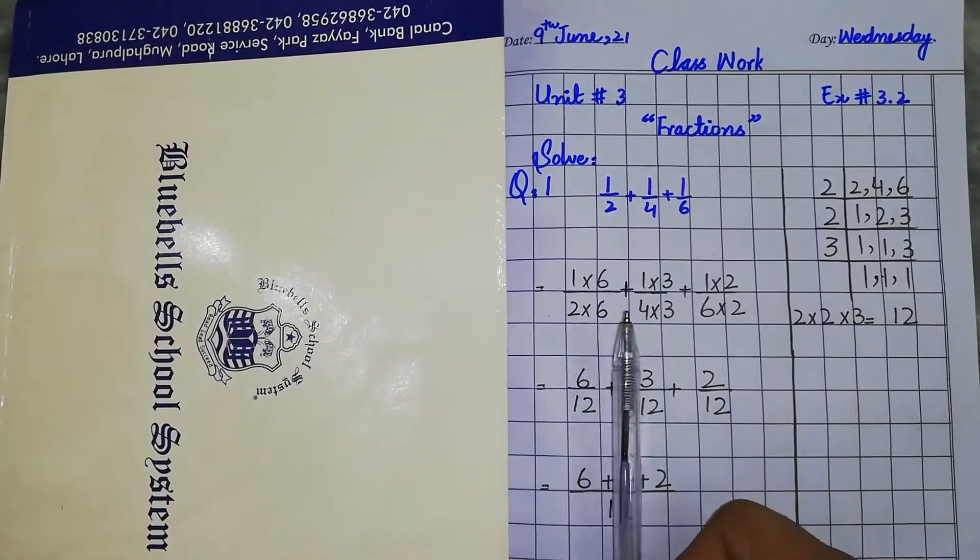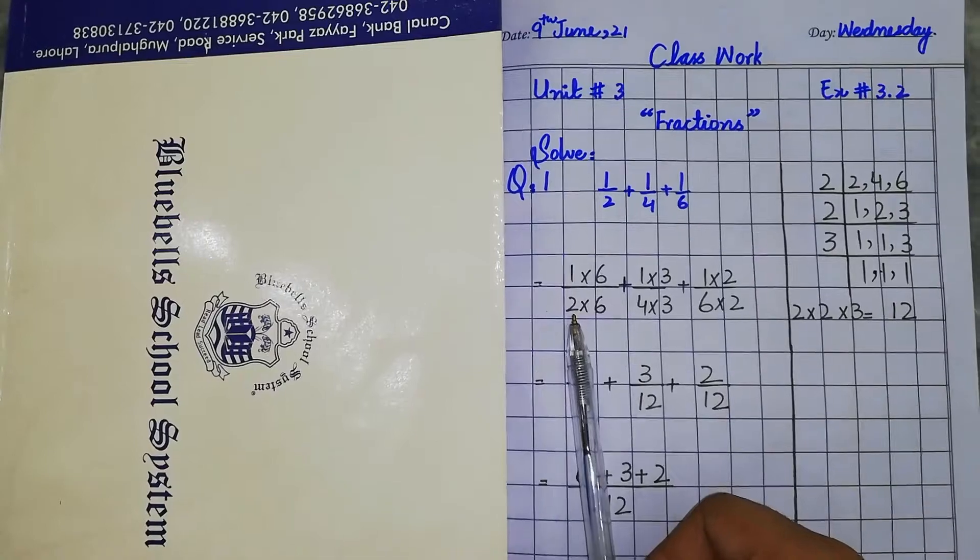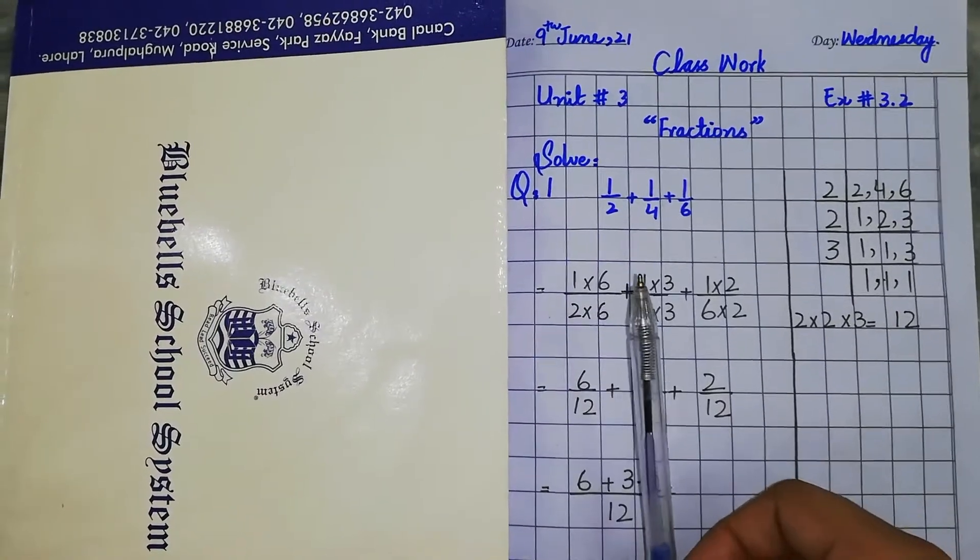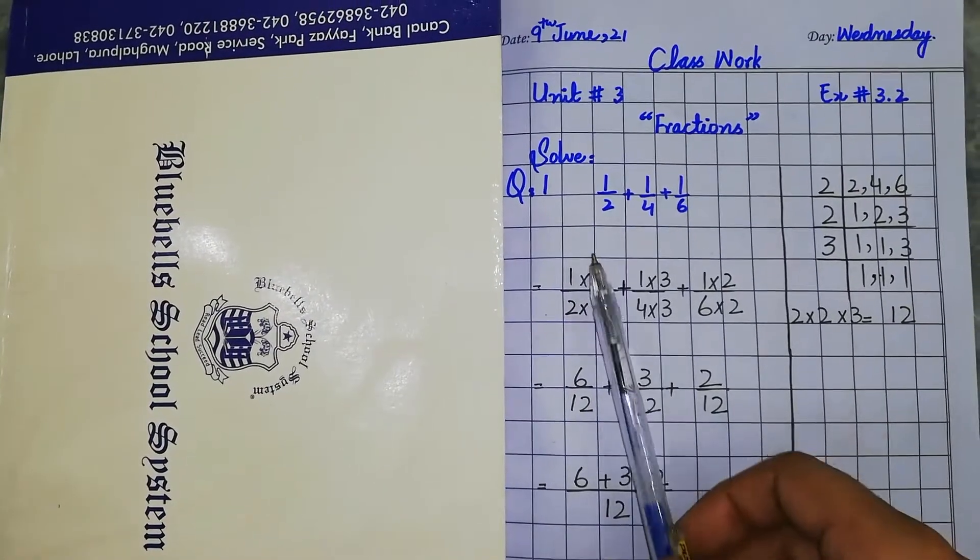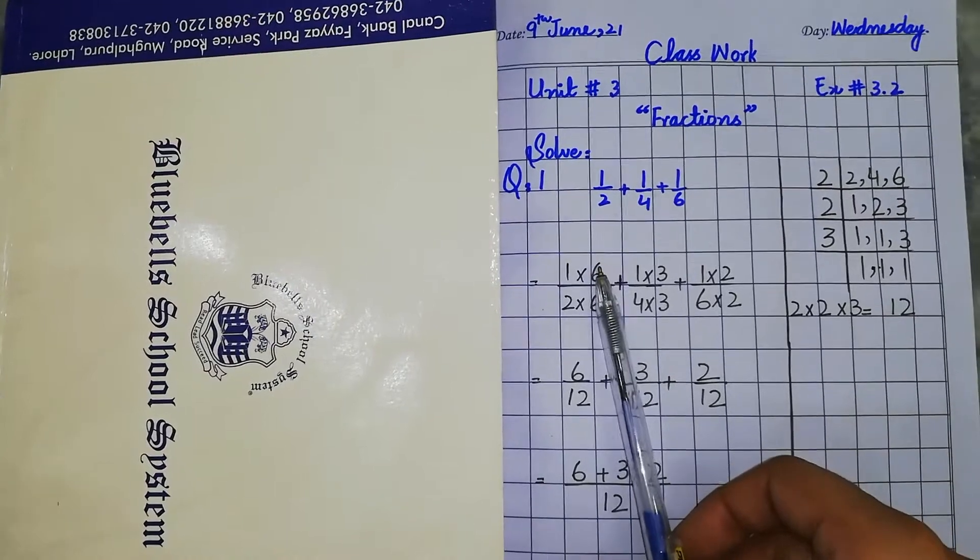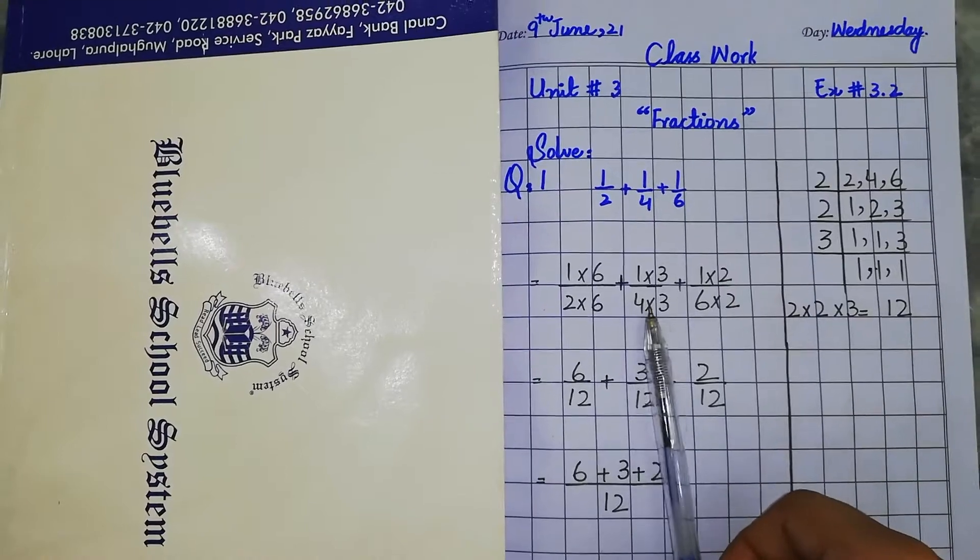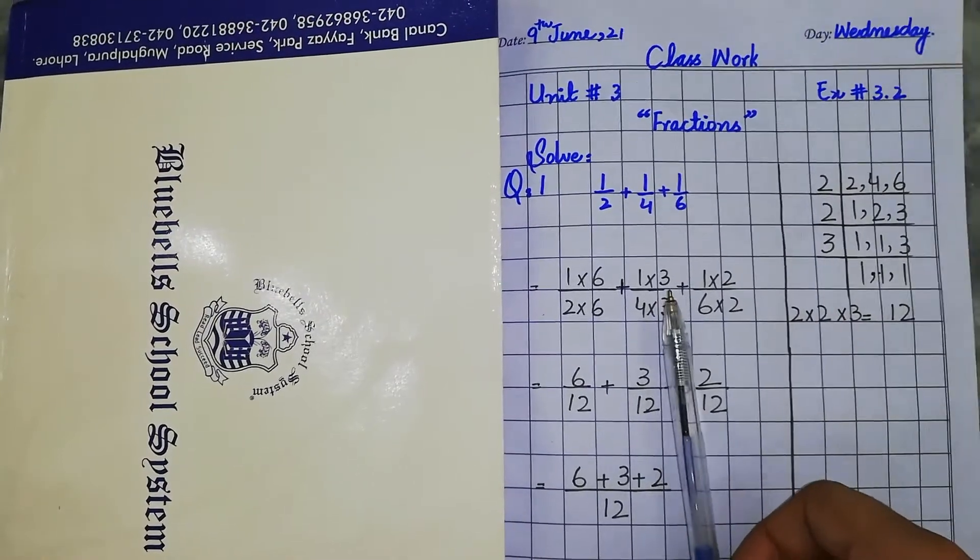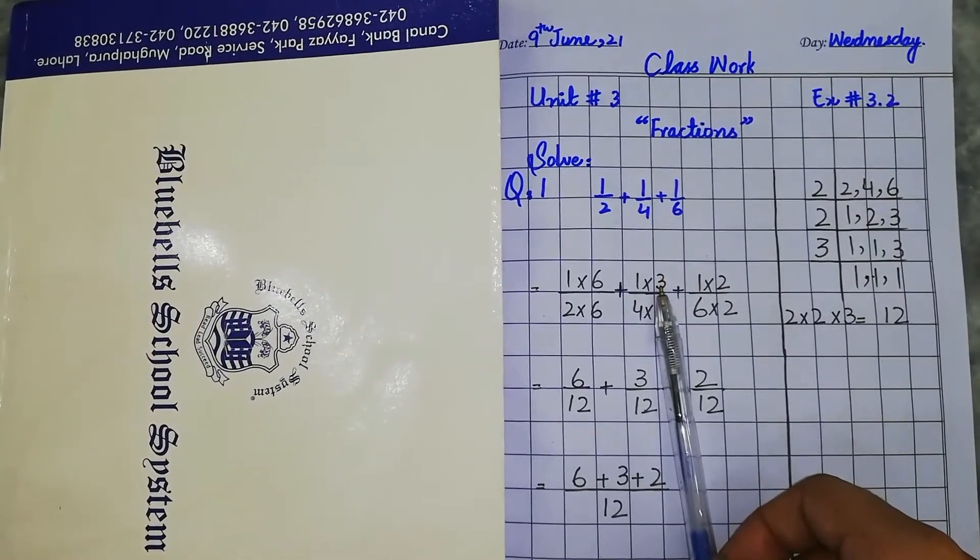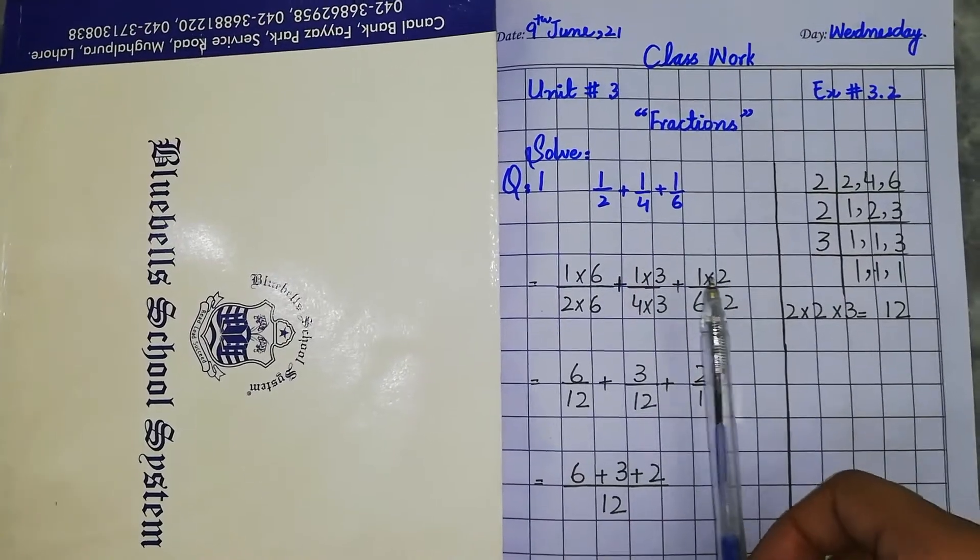For denominator 2, we multiply by 6 to get 12, and multiply the numerator by 6. For denominator 4, we multiply by 3: 4 times 3 equals 12, giving us 3 in the numerator.